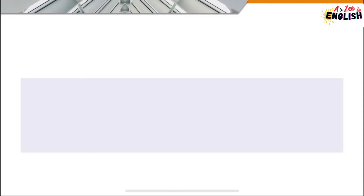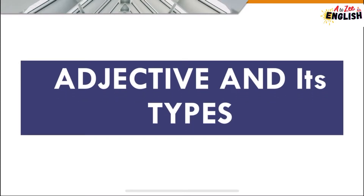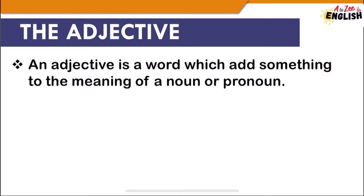In this video lecture we are going to talk about adjectives and its types. An adjective is a word which adds something to the meaning of a noun or pronoun. It tells the characteristic of a noun, pronoun, or any other noun phrase. These are generally found after the linking verb or before the noun it modifies.